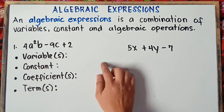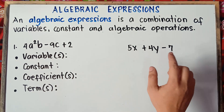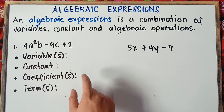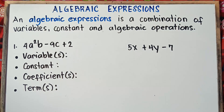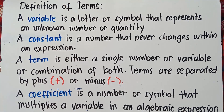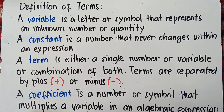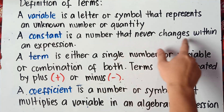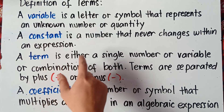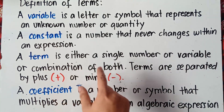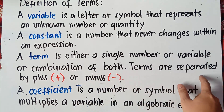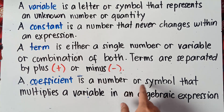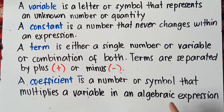This is an example of an algebraic expression: we have 5x plus 4y minus 7. So let's talk about variables, constant, coefficients, and terms. A variable is a letter or symbol that represents an unknown number or quantity. A constant is a number that never changes within an expression. A term is either a single number or variable, or a combination of both. Terms are separated by plus or minus sign.